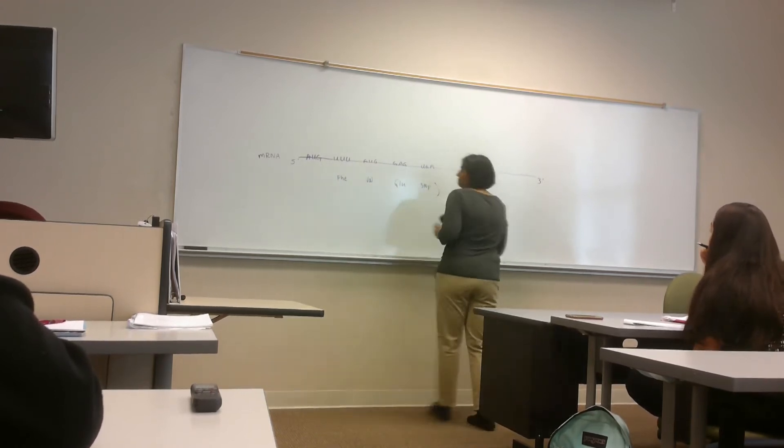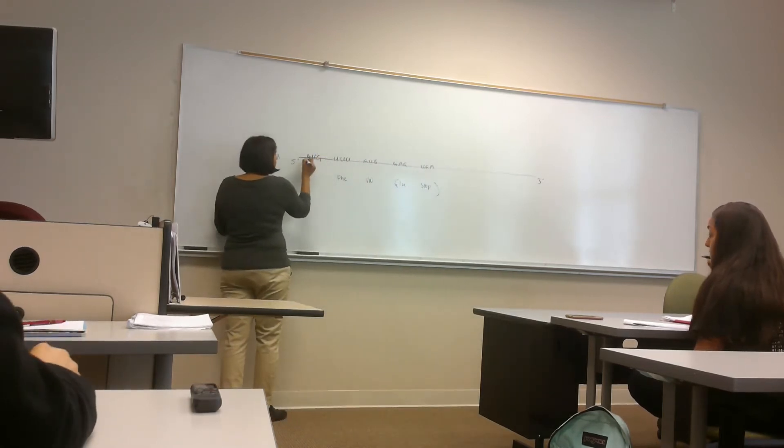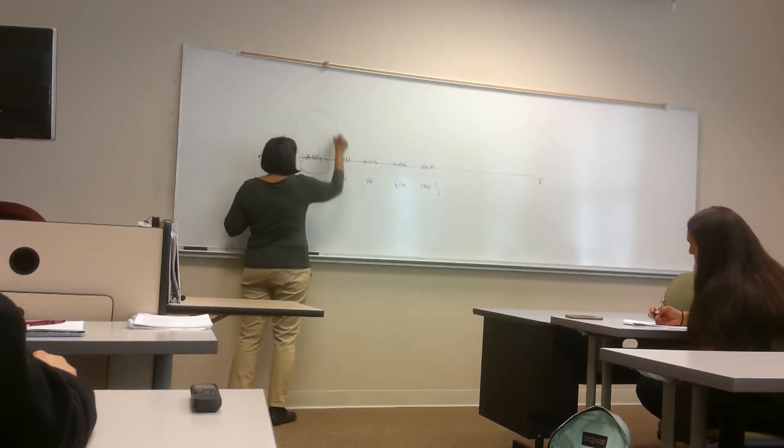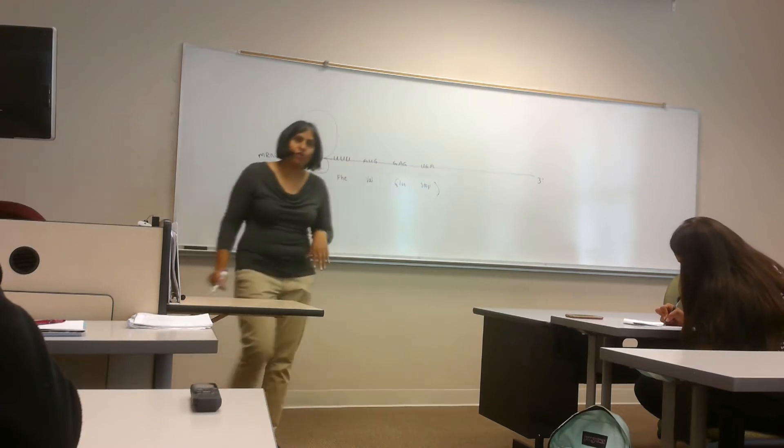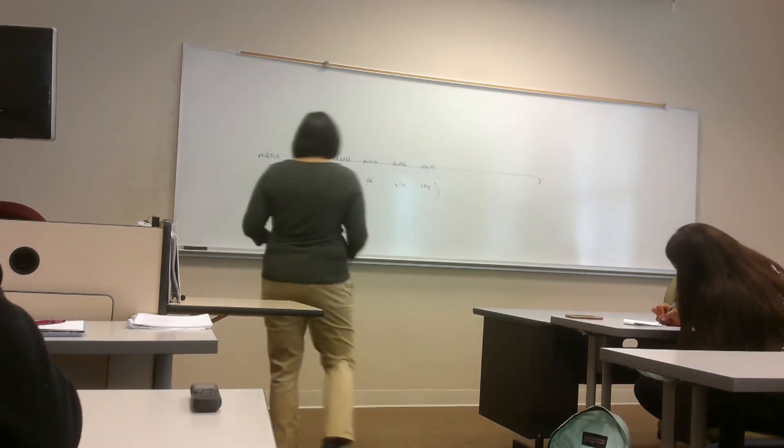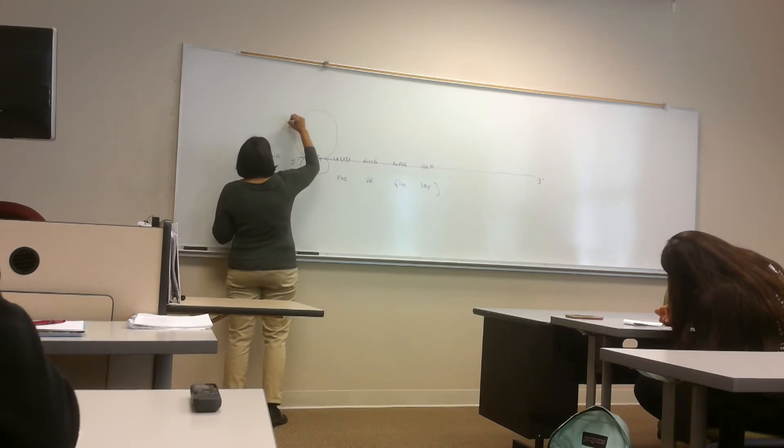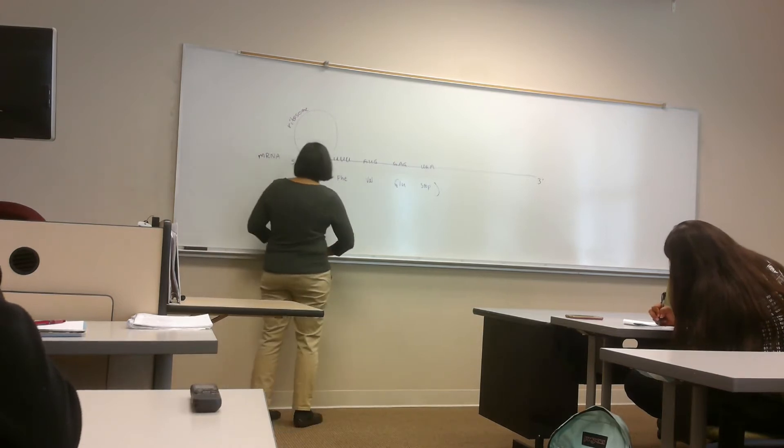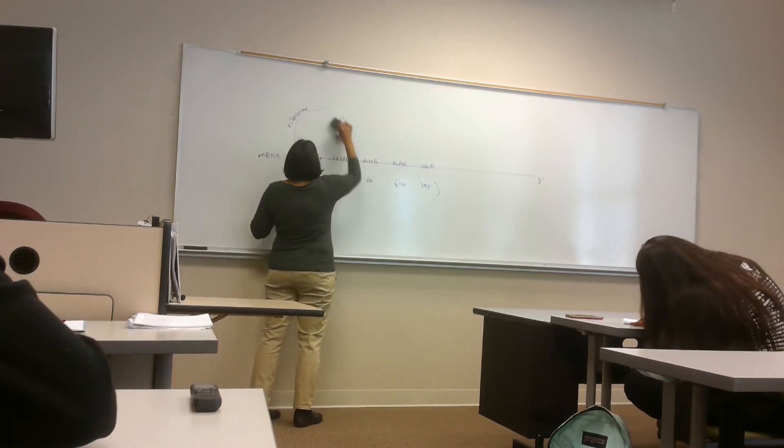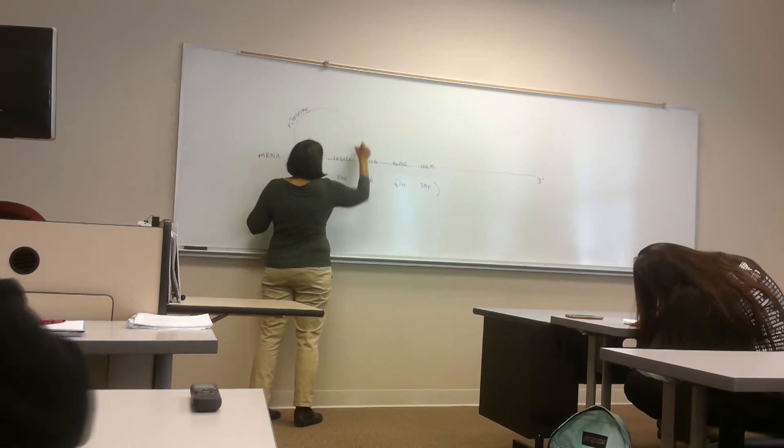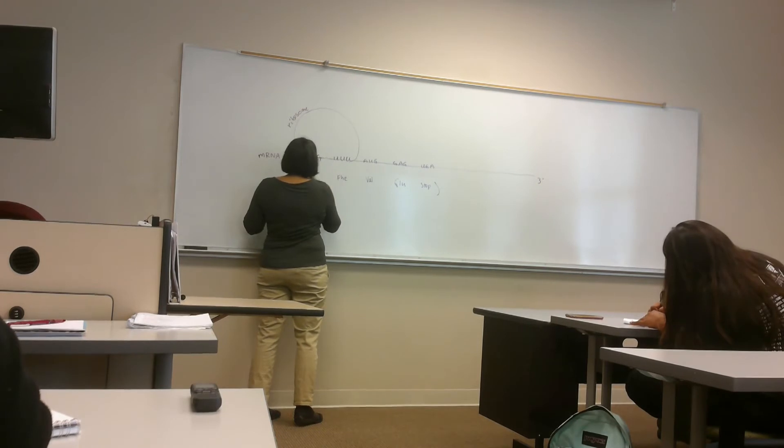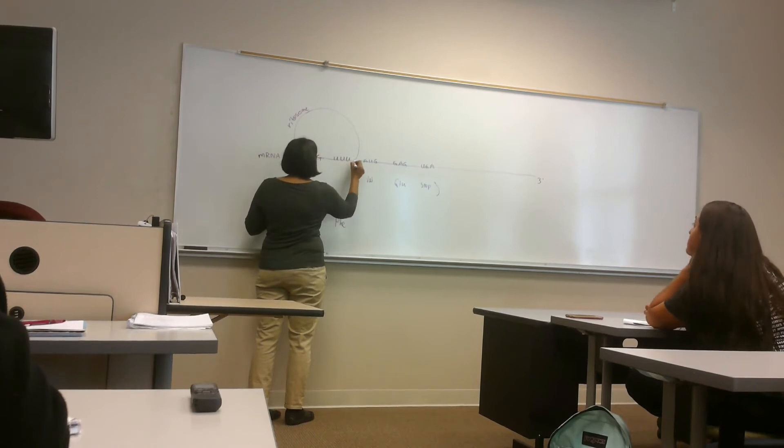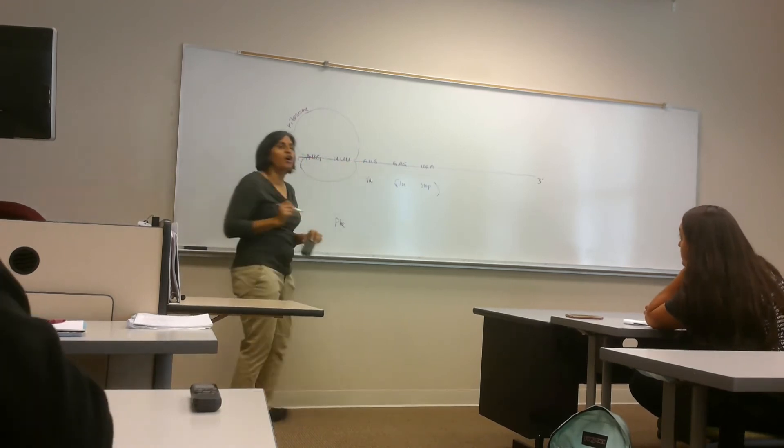Now, the ribosome has two subunits, a large and a small. So let's draw that. Okay, now, there are two binding sites on the ribosome, okay, and the video said the A and the P sites. I don't ask you to care that much that you know A and the P sites, because I can't remember what it means either, okay, but I want you to know there are two sites on the ribosome, and those two sites are where the tRNA molecules will bond, okay. The A and the P sites are sites where the tRNA molecules bind, okay.